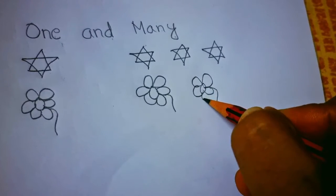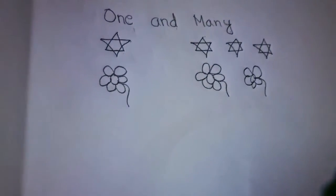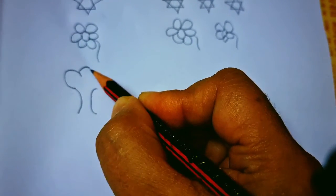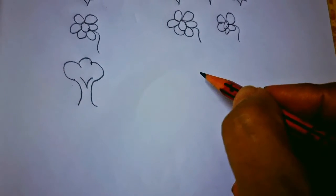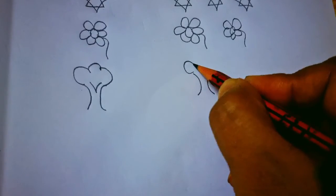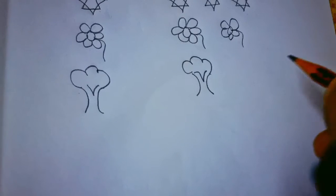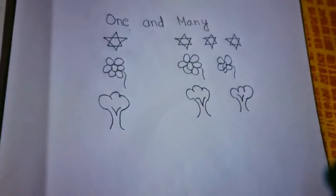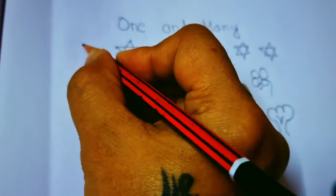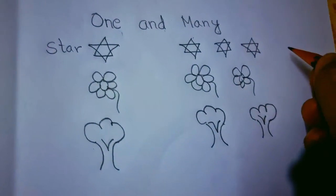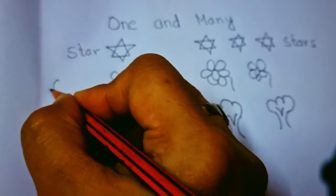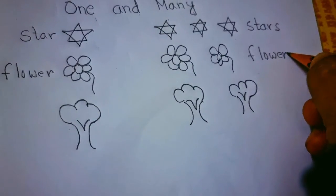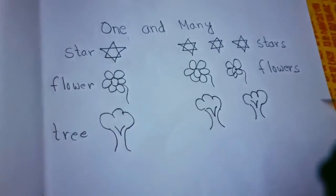See, here this is the way to draw flower in a very simple way. And now we'll draw a tree. Tree, first do like this and then do like this. See tree, very easy. Like this. This is star, stars, flower, flowers, tree, trees, trees.